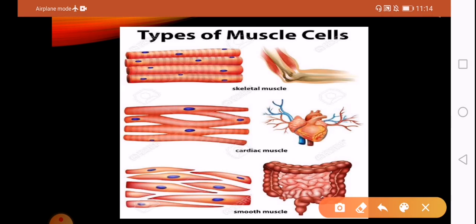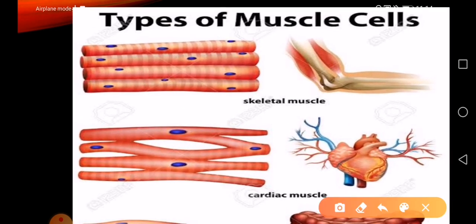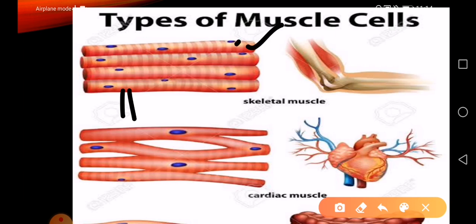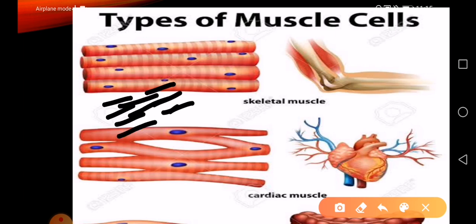In the diagram, you can see the nucleus shown in blue color. When you look at the circular structures of cardiac muscles, you can see light and dark bands present in them. When these bands start sliding over each other, the muscle contracts, and when they slide back, the muscle relaxes.